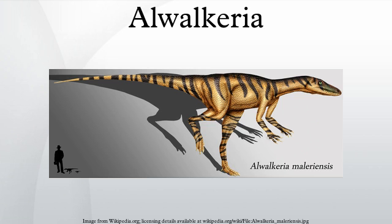Distinguishing anatomical features: a diagnosis is a statement of the anatomical features of an organism that collectively distinguish it from all other organisms. Some, but not all, of the features in a diagnosis are also autapomorphies. An autapomorphy is a distinctive anatomical feature that is unique to a given organism or group. According to Chatterjee, Orwakiria can be distinguished based on the following characteristics.